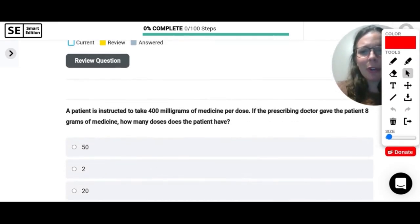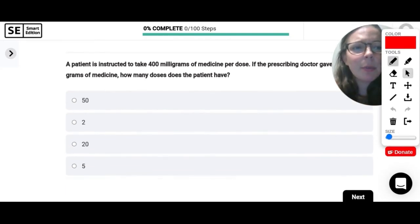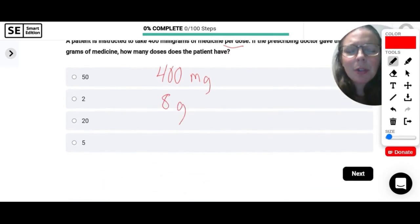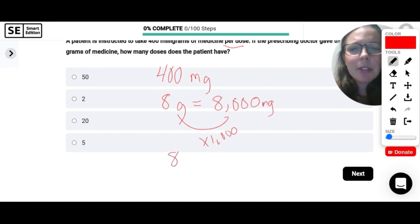A patient is instructed to take 400 milligrams of medicine per dose. If the prescribing doctor gave the patient 8 grams of medicine, how many doses does the patient have? So we have 400 milligrams per dose, and the doctor gave the patient 8 grams. So because we don't have the same units, I'm going to convert to one of these to be the same as the other. So I'm going to go from grams to milligrams. So we just have to multiply by 1,000. So 8 grams is 8,000 milligrams. And now I take that 8,000 and divide it by 400 per dose, and I will get 20 doses.